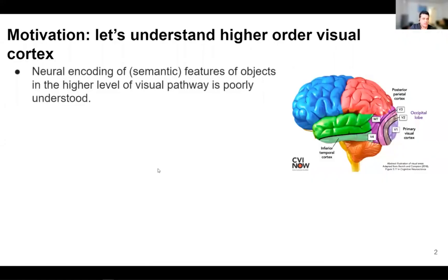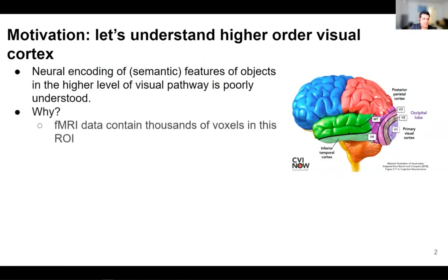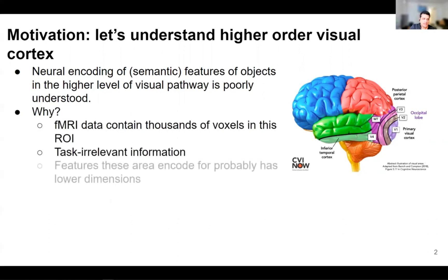Higher-order regions in the visual cortex encode for high-level features in objects, but the mechanism of how this encoding process happens is poorly understood. This is partly because the techniques that we use, such as fMRI, to study these brain regions contain thousands of features.